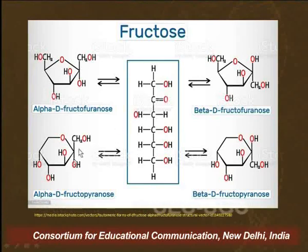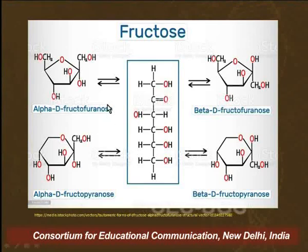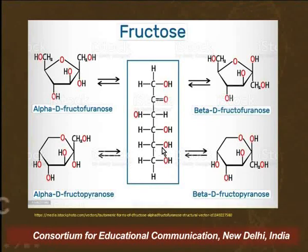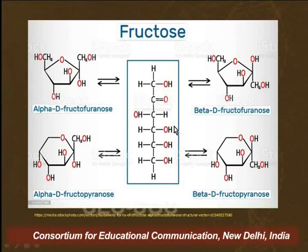The rest of the hydroxyl groups are attached to the other carbons. The vertical lines represent bonds going away from the observer and horizontal lines represent bonds coming towards the observer. Since it has six carbons, we call it a hexose, and since it has a ketonic group, it is known as a keto hexose. This molecule has configuration capital D because the OH on the highest numbered asymmetric carbon is on the right-hand side. This molecule has a ketonic group as well as five hydroxyl groups, so it will show the properties of ketones.